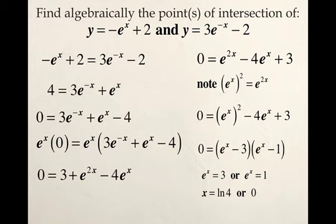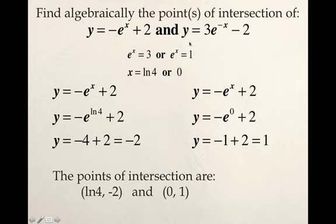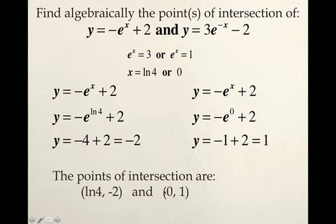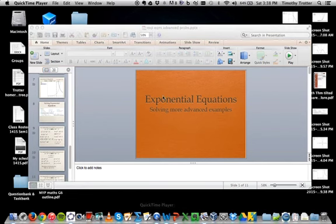We found the x values, but the problem asks for points of intersection, so we need y values too. Substituting x = ln(4) into one of the equations, e and natural log cancel, simplifying to give y = -4. Substituting x = 0 gives y = -1. So the two points of intersection are (ln(4), -4) and (0, -1). Looking at the graph, we can see why there are two crossing points. Hopefully that gives you a solid foundation for solving these problems - good luck.